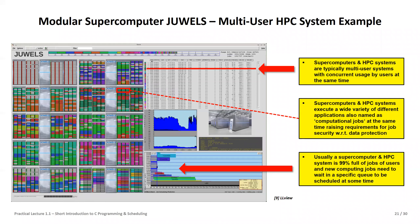The first essence: supercomputers are multi-user systems. It's a very costly machine with lots of cores, and you share it with many, many other users — each with different numbers of cores and different jobs. The second essence: you can see the internal system view — the rack configuration and HPC system architecture — and how jobs are scheduled on different CPUs and GPUs and accelerators available in systems like JUWELS and the JUWELS Booster.